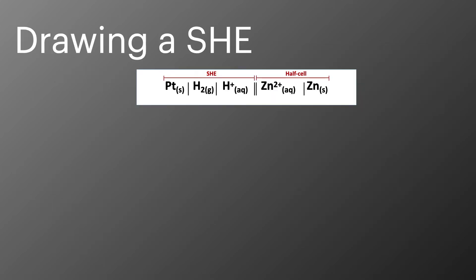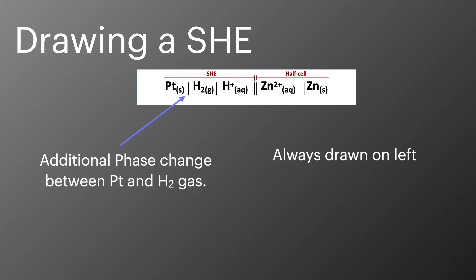When it comes to drawing out a standard hydrogen electrode, it's slightly different to how we've done them before. So this time we add in an extra phase change because we've got a phase change between the solid platinum and the hydrogen gas. We always draw the standard hydrogen electrode on the left, and it always has a voltage of zero.